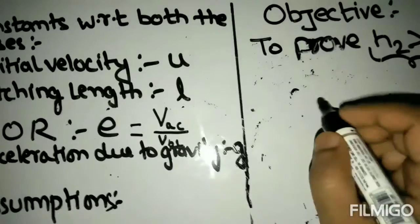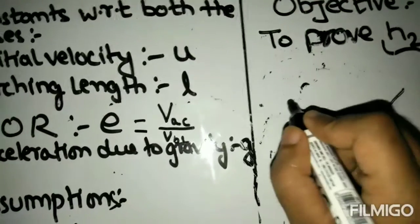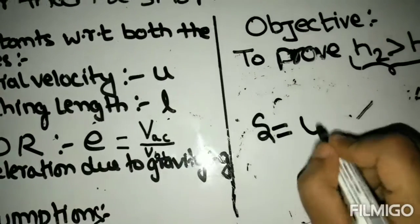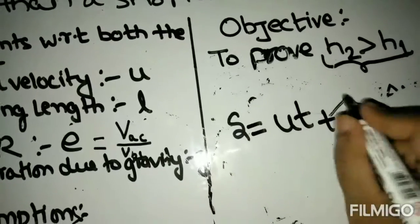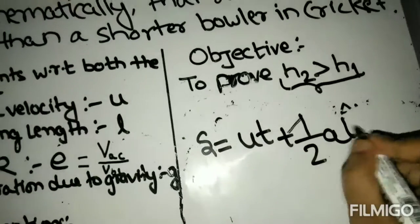So for this, we are going to need the second equation of motion, which is s equals to ut plus 1 by 2 at square.